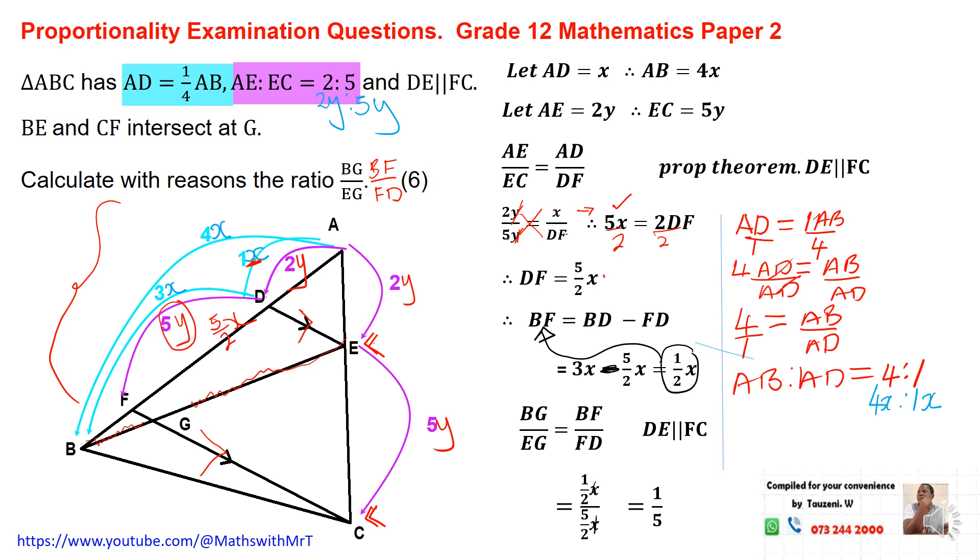This is proportionality. It's a bit heavy. There are quite a number of options that we can use to answer the same question, but we just decided to go through this route in this particular question. After studying it for quite a while, you can be able to come up with different methods in which the same question can be answered. This is proportionality in Grade 12 Mathematics Paper 2. It needs quite an amount of studying to get it right.